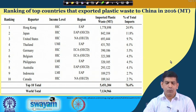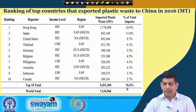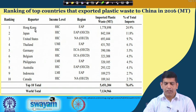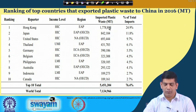The top countries that exported plastic waste to China in 2016 were Hong Kong, Japan, United States, Thailand, Germany, Belgium, Philippines, Australia, Indonesia, and Canada. The total from these top 10 was close to 76–77 percent. The material coming from Hong Kong was actually partly from other countries — it was generated somewhere else but channeled through Hong Kong, which is why you see a large number there despite Hong Kong's smaller population.